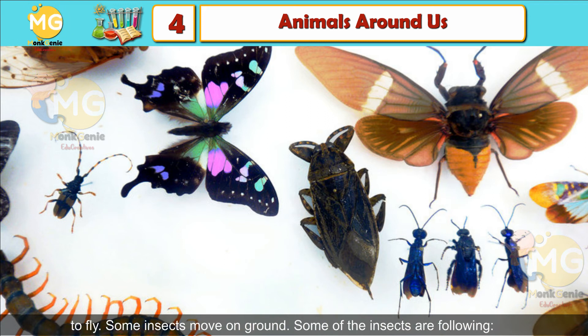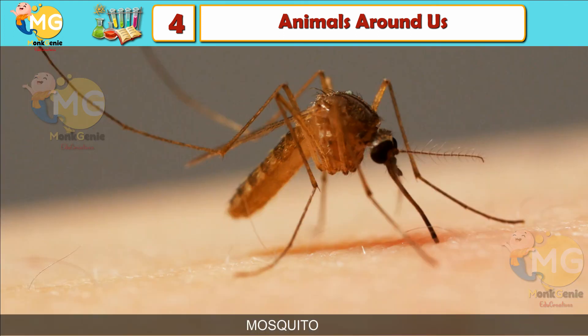Insects. Insects are small animals. All insects have six legs. Some insects have wings to fly, and some insects move on the ground. Some of the insects are: mosquito, fly, cockroach, bee, butterfly.